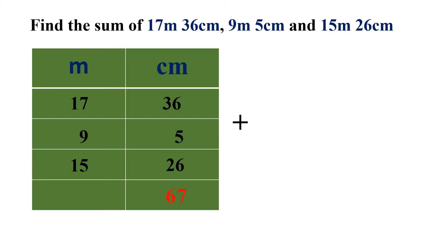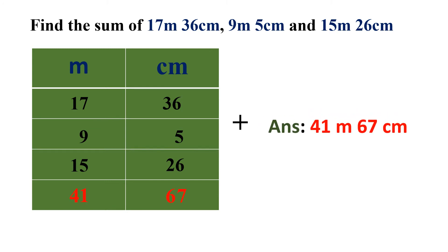Moving to the meter side: 7 plus 9 plus 5 is equal to 21. We write 1 down and carry 2 over. 2 plus 1 plus 1 is equal to 4. So the answer is 41 meters 67 centimeters.